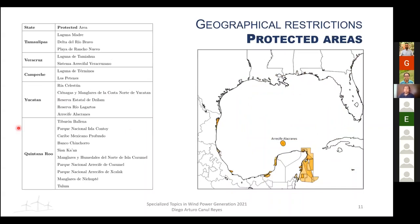The second restriction is protected areas, which must be avoided to preserve nature. These include three areas in Tamaulipas, two in Veracruz, two in Campeche, five in Yucatan (one far from the coast), and ten in Quintana Roo. Just from this map, the Quintana Roo coast can already be excluded due to the density of protected areas.